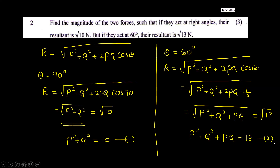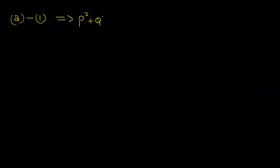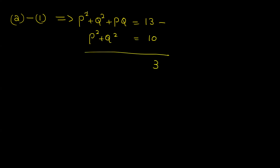Squaring both sides gives P squared plus Q squared plus PQ equals 13. Substituting equation one, where P squared plus Q squared equals 10, we get 10 plus PQ equals 13. Therefore PQ equals 3. So the second equation is P squared plus Q squared plus PQ equals 13.